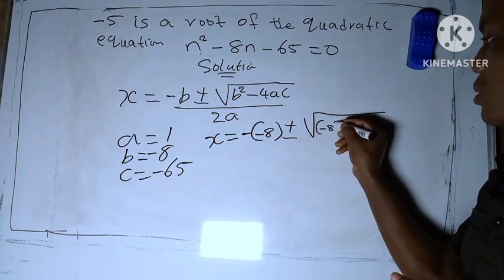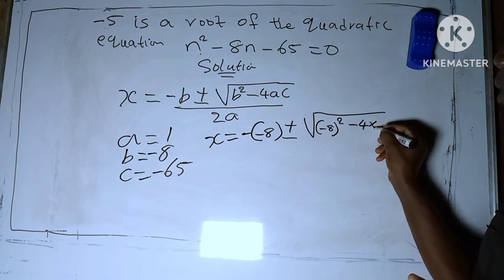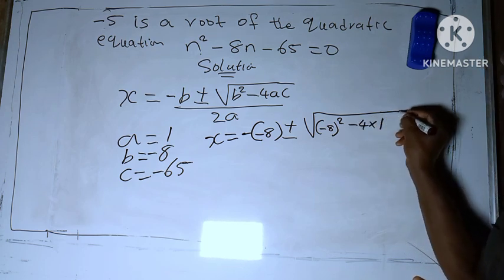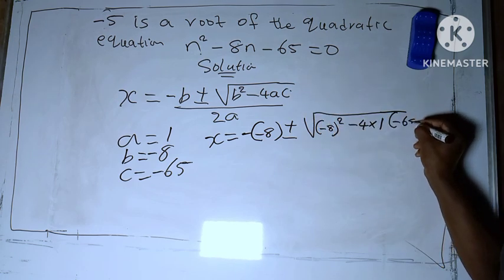So -8 raised to the power two, minus four multiply by our a, which is one, and our c is -65.